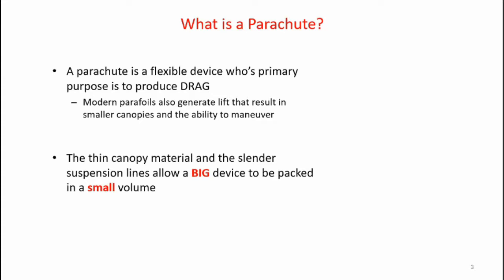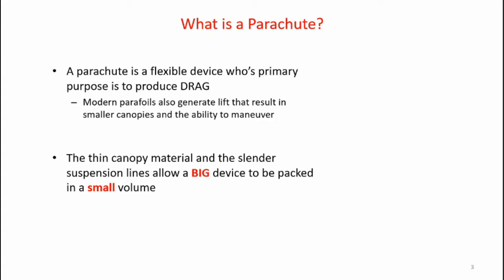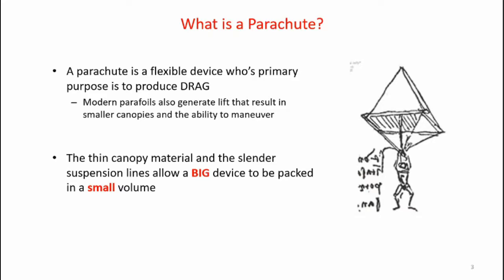A parachute is a flexible device whose primary purpose is to produce drag. Modern parafoils also generate lift, and that results in smaller canopies and the ability to maneuver. However, in this video we're going to focus on non-lifting parachutes. The thin canopy material and the slender suspension lines allow a big device to be packed into a very small volume. Here's a 63-foot cross parachute, and you can see the relative size of the parachute pack at the bottom of the image.